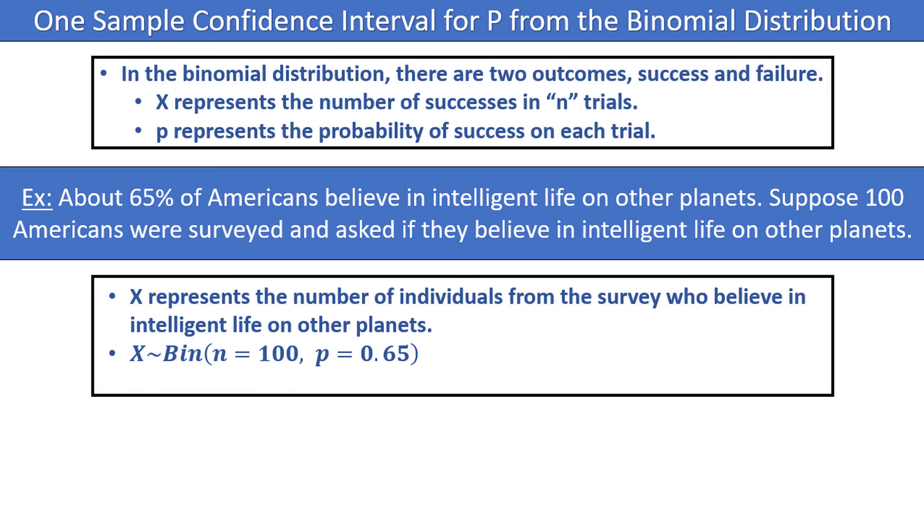We could then answer questions like, what is the probability less than 50 people from a survey of 100 believe in intelligent life on other planets? Or what is the probability between 60 and 80 people from a survey of 100 believe in life on other planets?